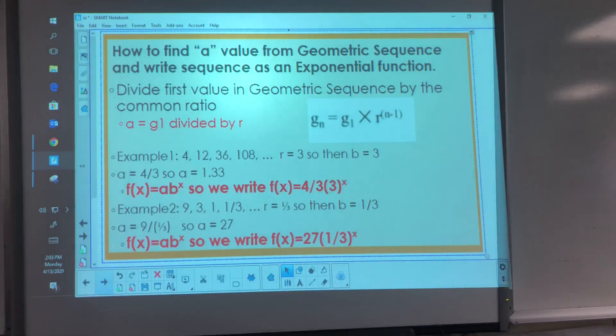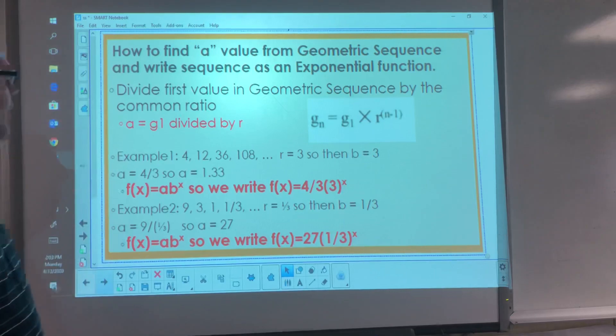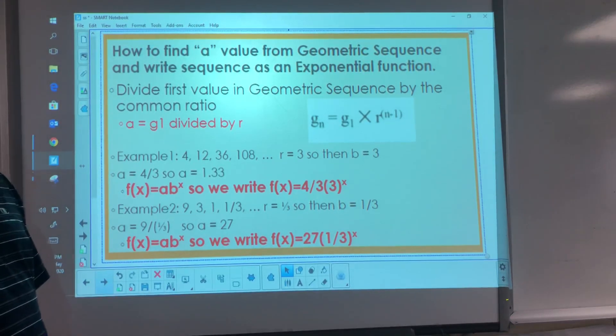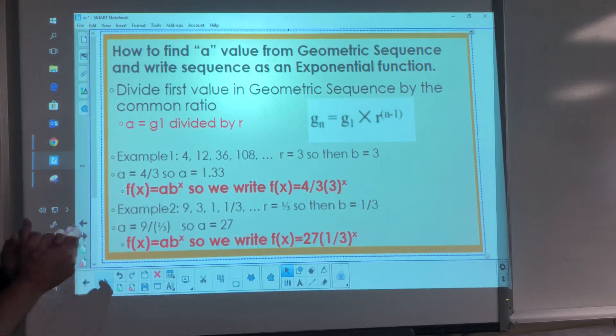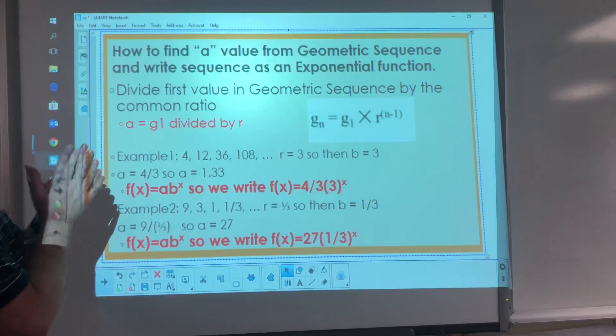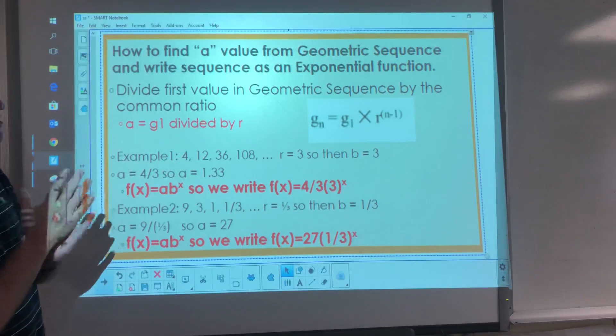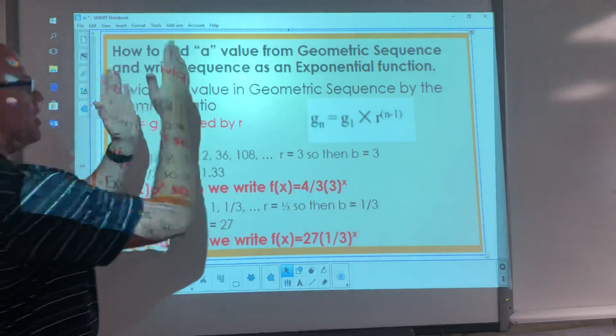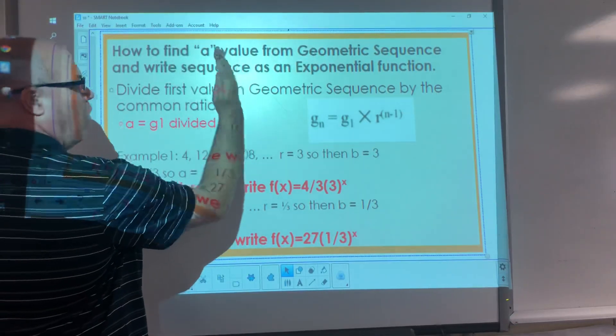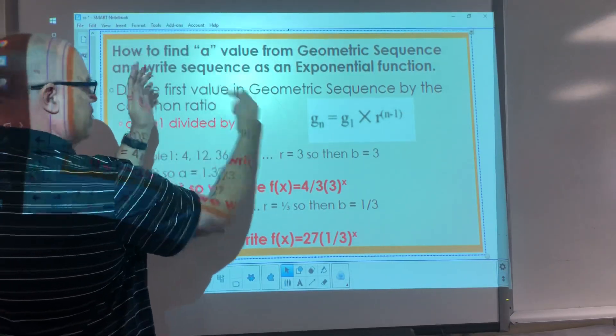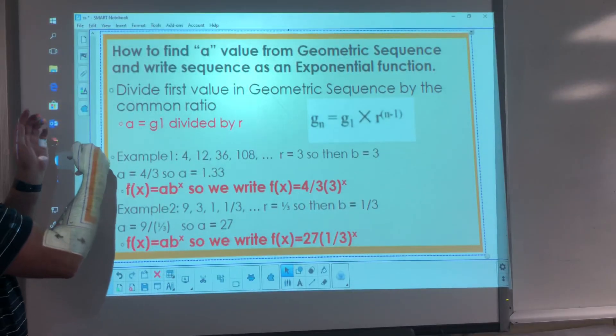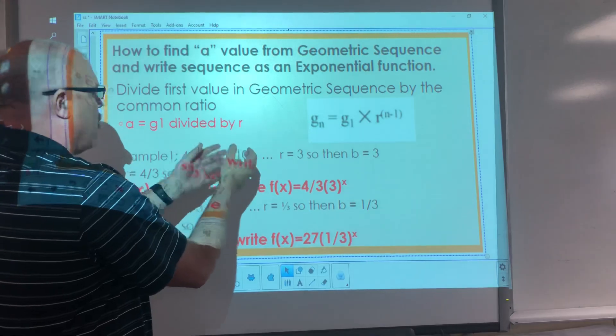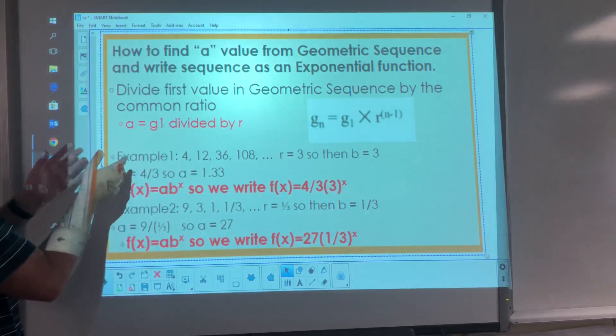All right? Okay, for today, I want you to be able to find the a value from the geometric sequence, and I want you to write that sequence as an exponential function. So to do this, we're going to divide the first value in the geometric sequence by the common ratio. So you can think about it. We know that it starts at 1, like x is 1, but we want x is 0. So we need to go back one more. But the geometric sequence, it wasn't set up that way. So all we're going to do is we're going to divide by r.